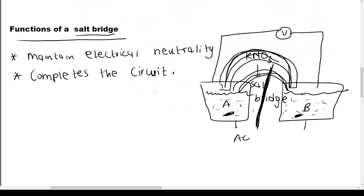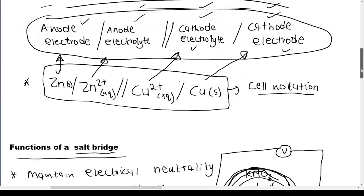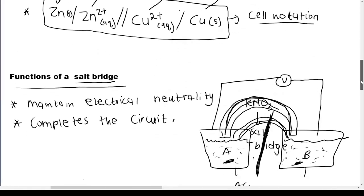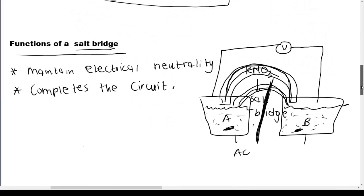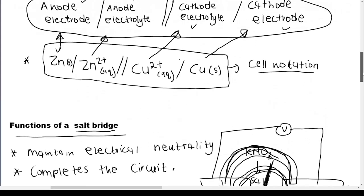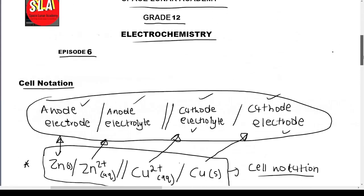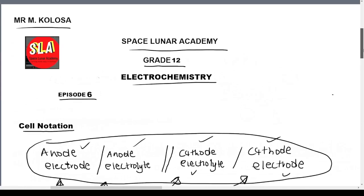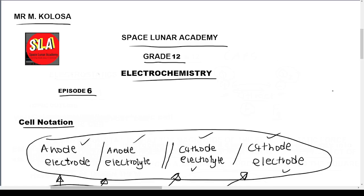So the function of a salt bridge is to complete the circuit or to maintain electrical neutrality. You may be required to write down one or two functions of the salt bridge. That is all for this video — I just wanted to talk about cell notation and the functions of a salt bridge. Keep those things in mind as they will ask you in exams. See you in the next episode — make sure you like, leave a comment, and subscribe. Thank you.